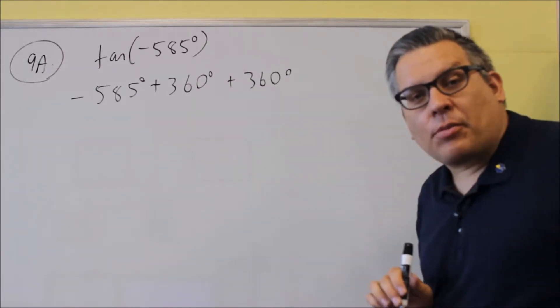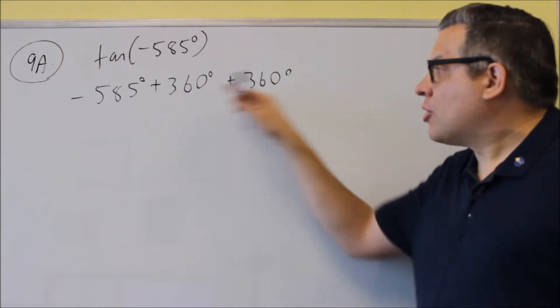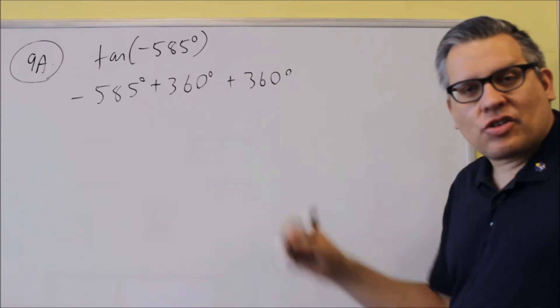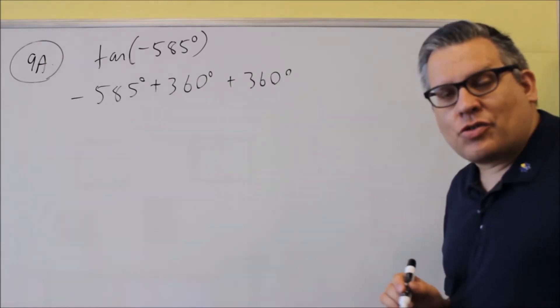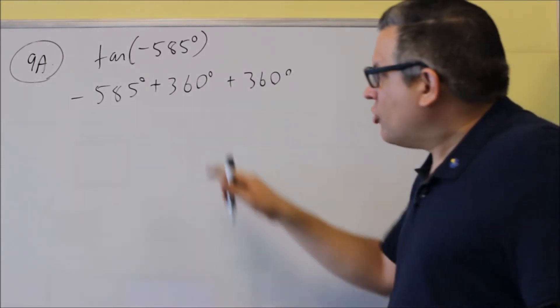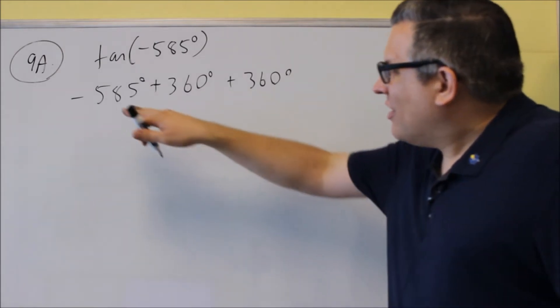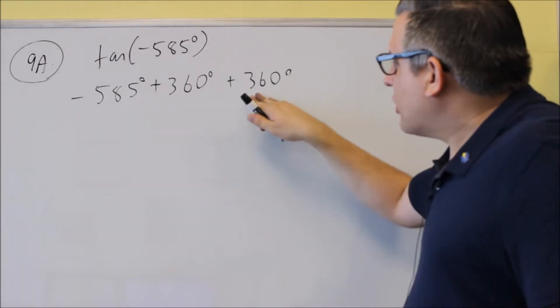We're actually using the periodic property here that says that if we add multiple revolutions, it's just going to take us around to the same spot on the unit circle. So instead of going multiple revolutions around, we'll still arrive at the same spot. I have negative 585 plus 360 plus 360.